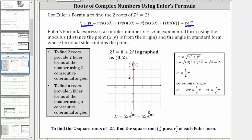Now let's find the least positive angle where the initial side is along the positive horizontal axis and the terminal side passes through the point (0, 2), which we can quickly see is equal to 90 degrees, or pi over two radians, which we'll use for our first angle theta.